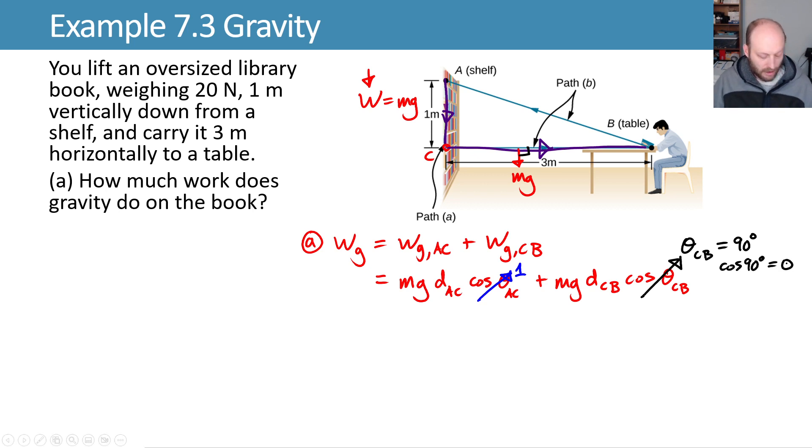What that means is because theta CB is 90 degrees, the cosine of 90 degrees is 0. So this whole term goes away because this evaluates to 0. So that leaves us with just the first part, Mg D_AC, which we can plug in values for.